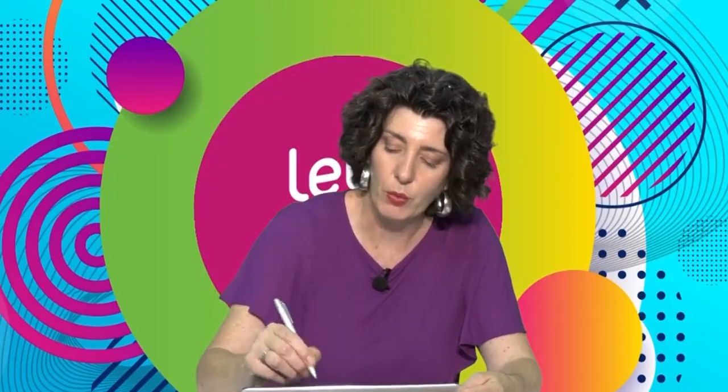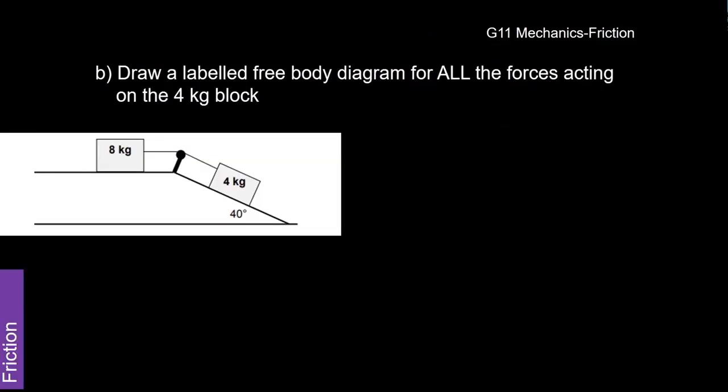When they talk about in words, they don't want the formula. So we know that the formula is F net equals MA. They don't want that. They want you to actually write it in words about the relationship between the force, the mass, and the acceleration. Okay.